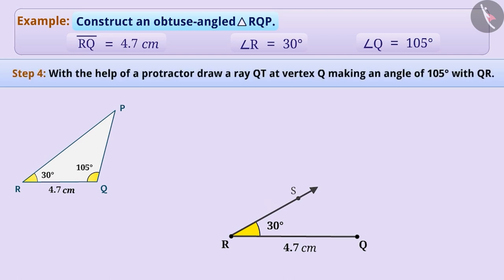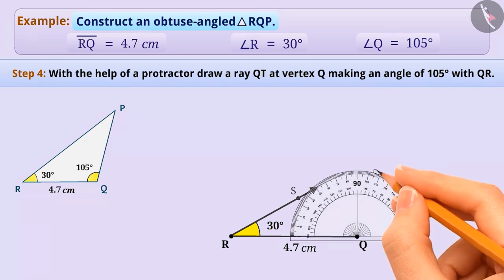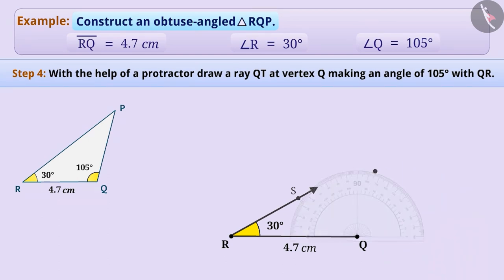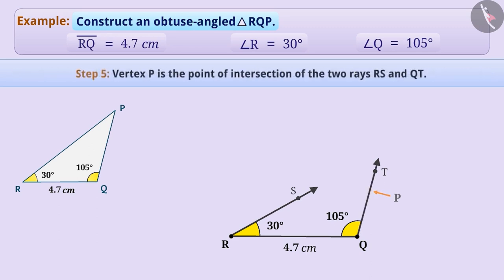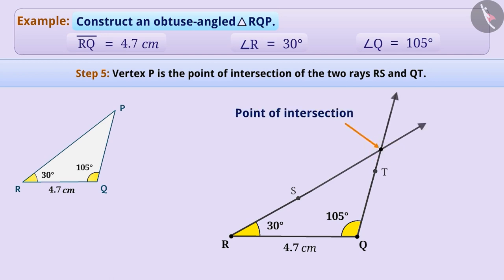Step 4: Now with the help of a protractor, we will construct an angle of 105 degrees at vertex Q. We will draw a ray at vertex Q making an angle of 105 degrees with QR, and label it ray QT. By the given condition, P must be on the ray QT also. Step 5: P has to lie on both rays RS and QT, so the vertex P is the point of intersection of the two rays RS and QT. We can extend the rays and obtain the point of intersection, which is the vertex P of triangle RQP.